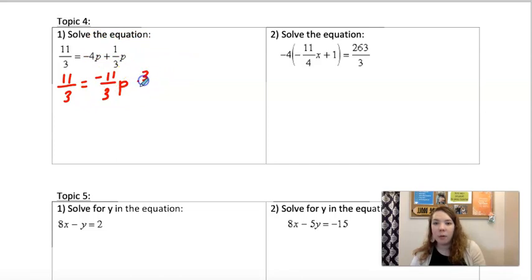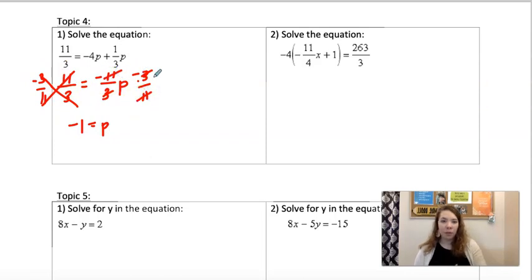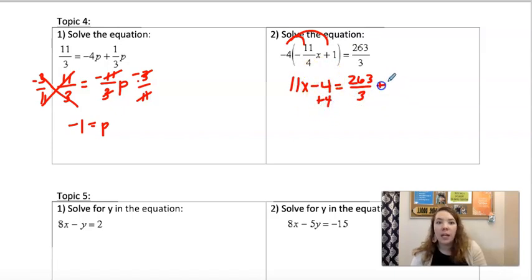Now these are going to cross simplify to be negative 1. So that would give us 11x minus 4. So then if you add 4, that's the same as adding 12/3 if you need a common denominator.